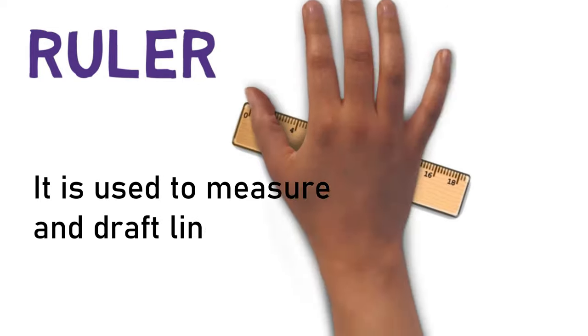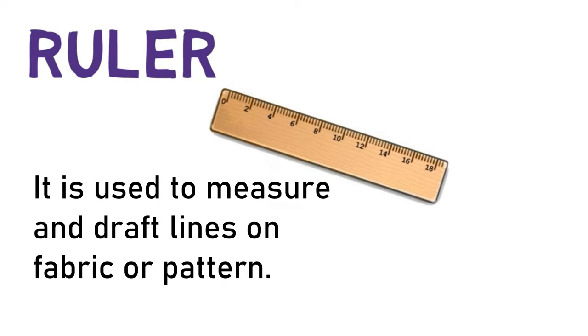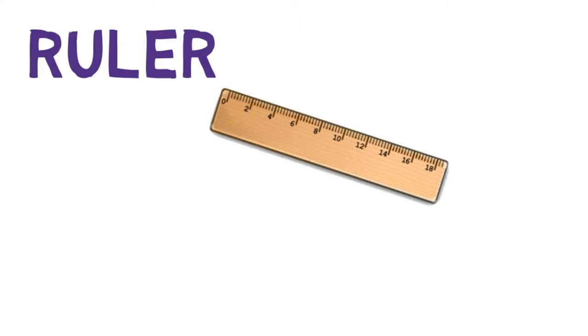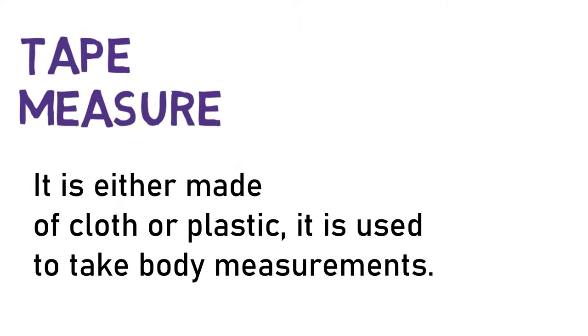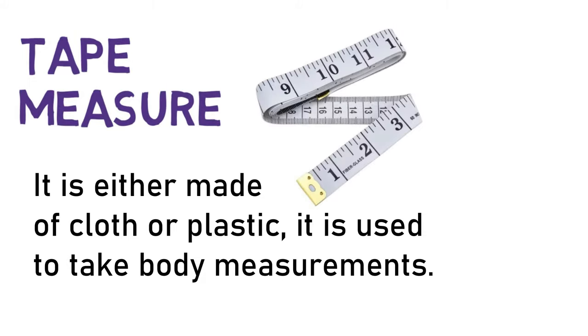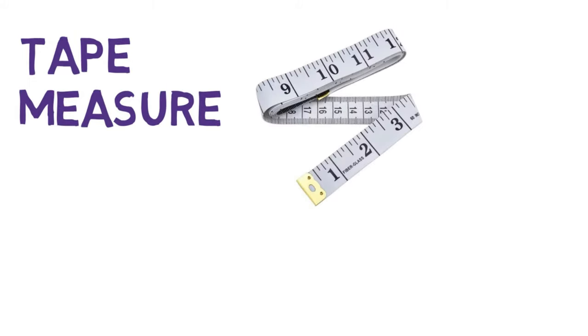Ruler. It is used to measure and draft lines on fabric or pattern. Tape measure is either made of cloth or plastic. It is used to take body measurements.